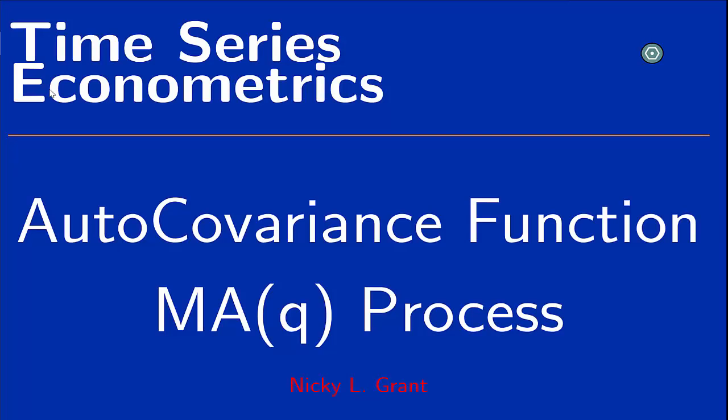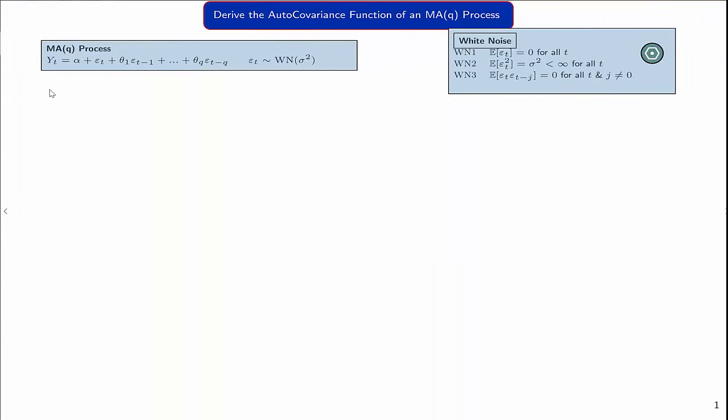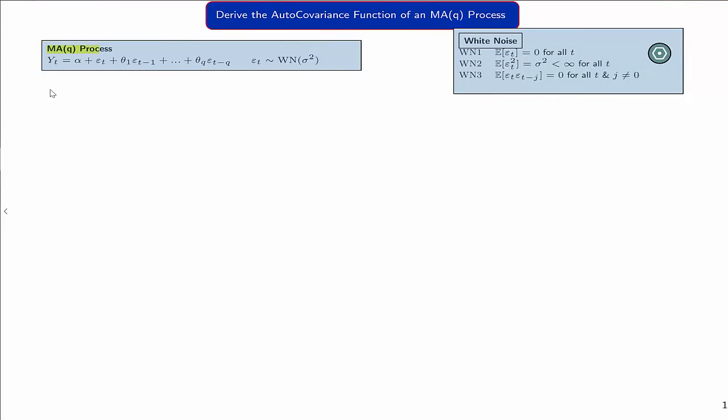By the end of this clip, you should be comfortable deriving the autocovariance function of a moving average process with Q lags. We have the definition of the MA(q) process, which we've seen before, where the shocks epsilon t are assumed to be white noise, and we're going to use these assumptions to derive this autocovariance function.